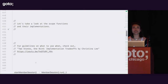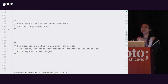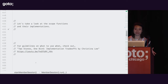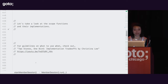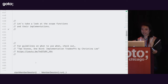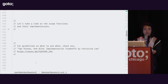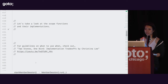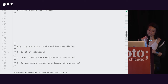One of my big challenges in Kotlin is trying to figure out what to call when — do I use apply, also, let, or run? I'm not going to talk about that today, but if you're always scratching your head about that, there's a great talk by a friend of mine, Christina Lee, called 'Two Stones, One Bird: Implementation Tradeoffs,' where she discusses her philosophy on how she chooses what to use when. It's a really good talk, so you should check it out.